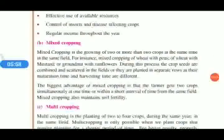Mixed cropping is the growing of two or more crops at the same time in the same field. For instance, mixed cropping of wheat with peas, wheat with mustard, or groundnut with sunflower. The crop seeds are combined and scattered in the field, or planted in separate rows. Since their maturation and harvesting times differ, we get different products at the same time with the same effort.